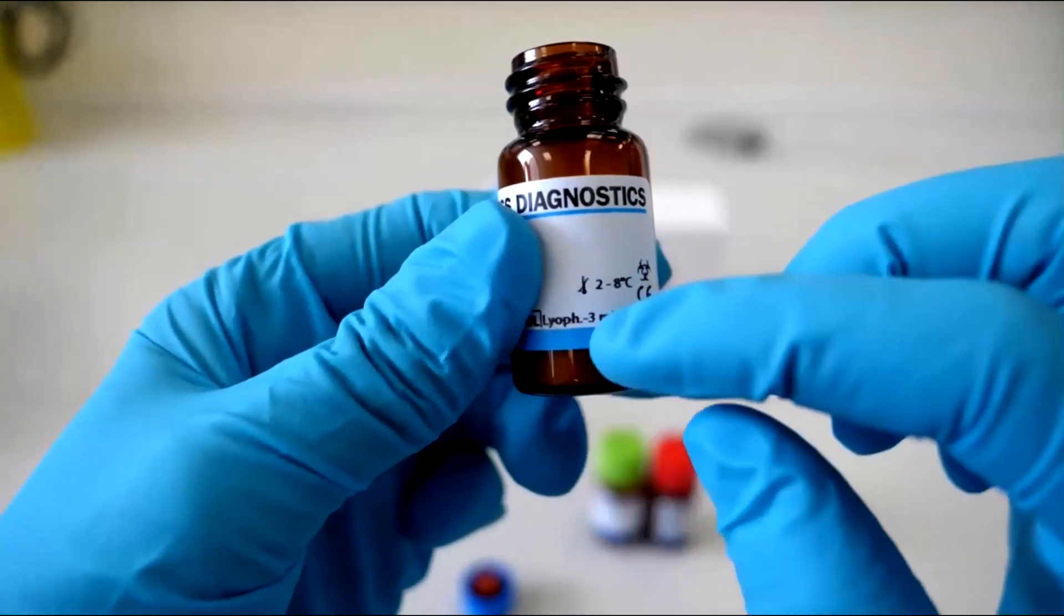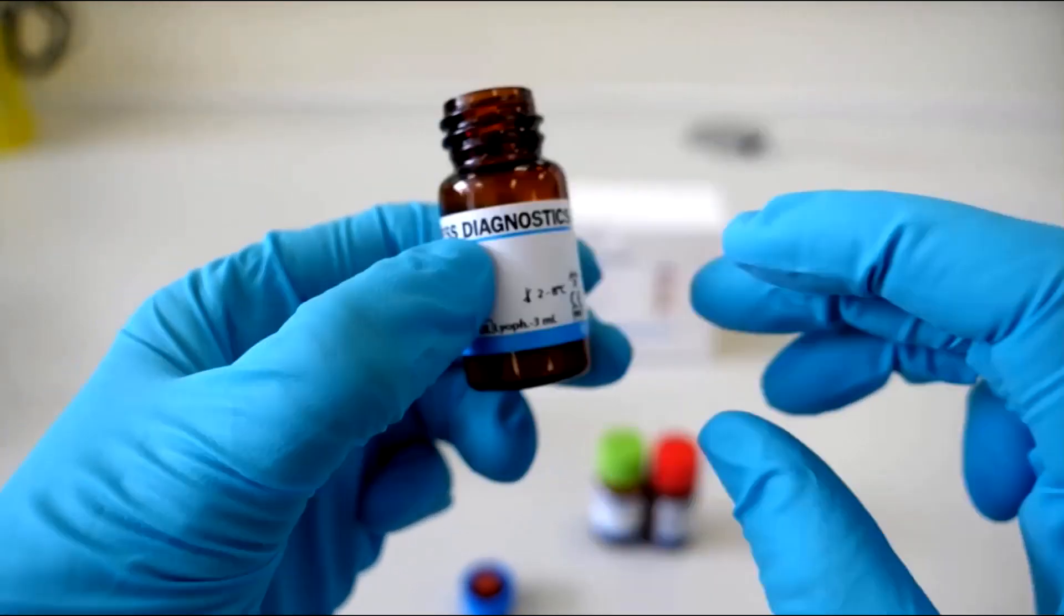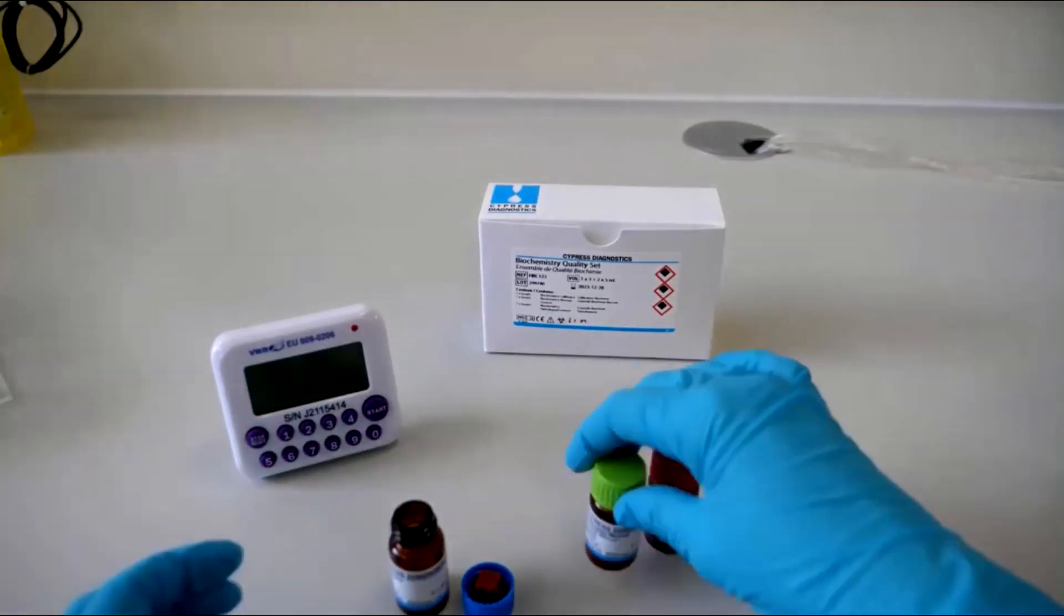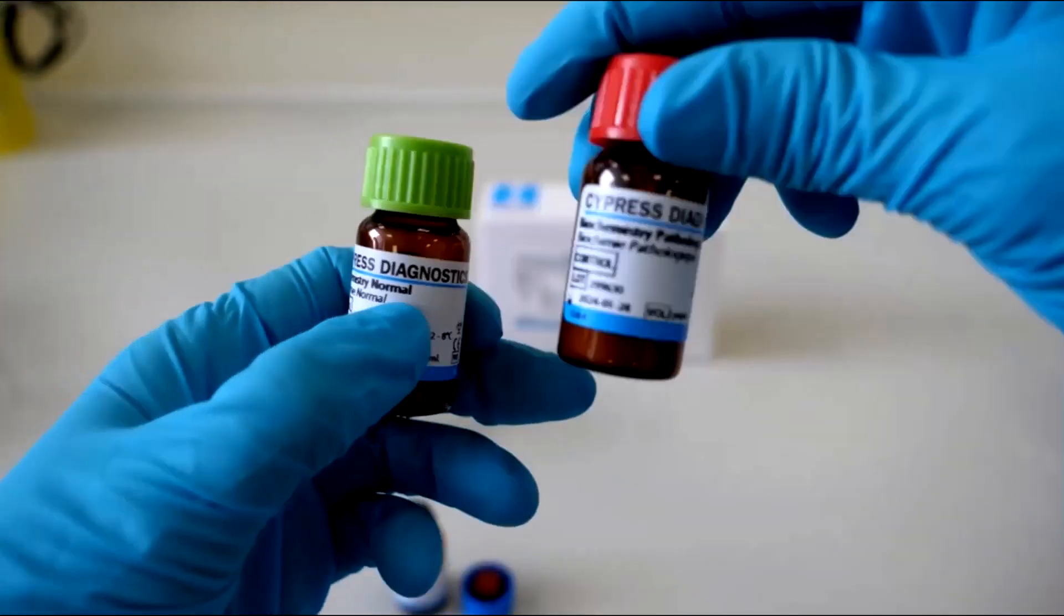The label on the vial indicates the amount of distilled water to add. 3 milliliters for the calibrator and 5 milliliters for each of the quality controls.